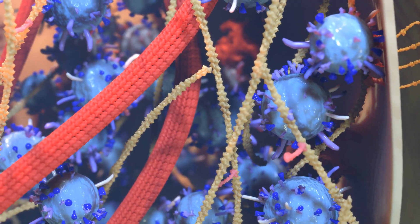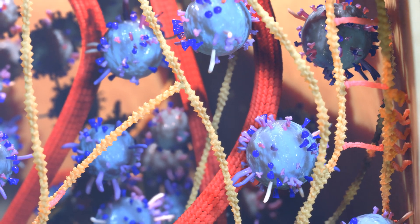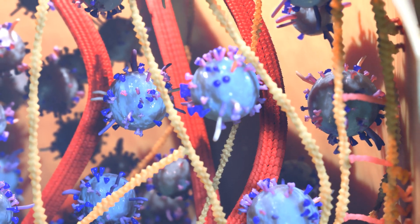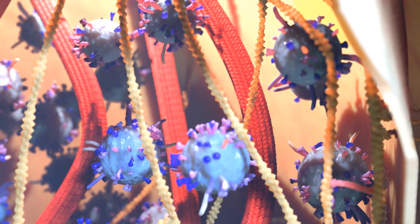These yellow strings are actin filaments, and the larger red tubes are microtubules. Microtubules act like highways, transporting vesicles and other essential cargo to the synapse.